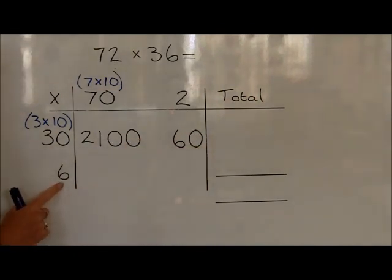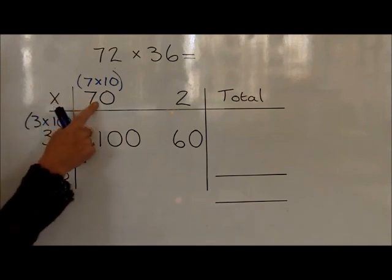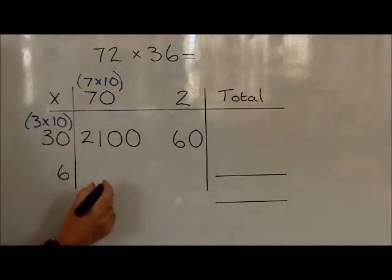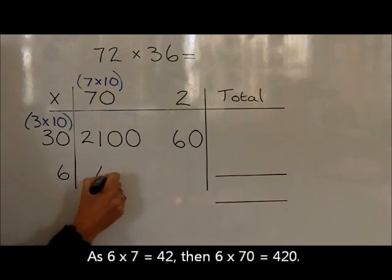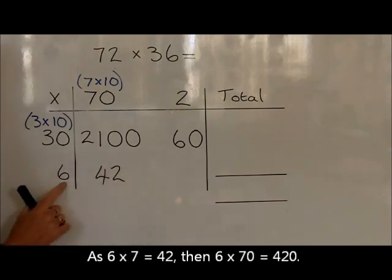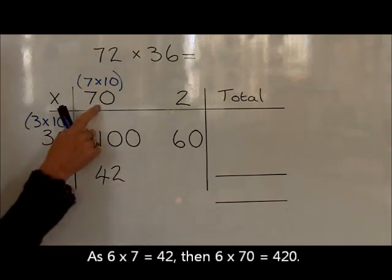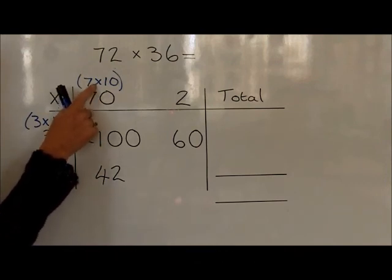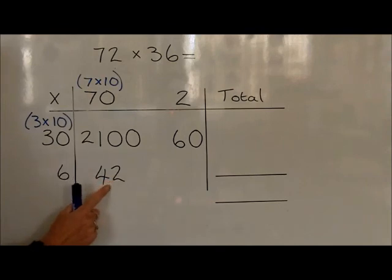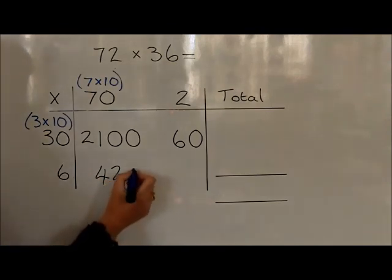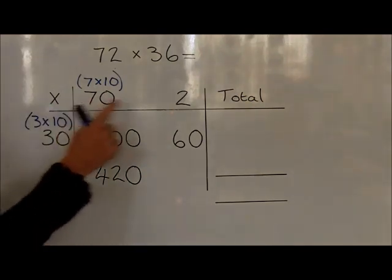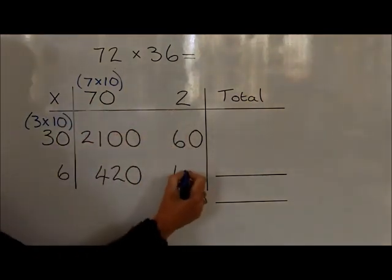We can now do 6 times 70, starting off with the fact that we know that 6 times 7 is 42. But we now need to work out 6 times 70. 70 is ten times bigger than 7, so the 42 we need to make ten times bigger, which is 420. We now work out 6 times 2, which is 12.